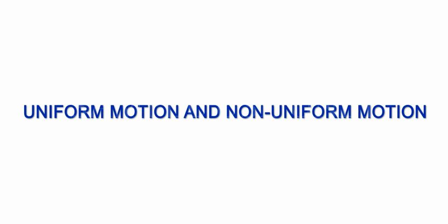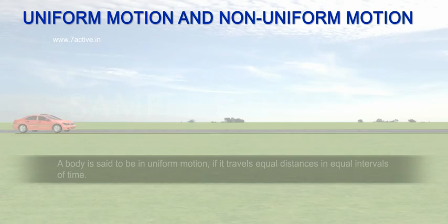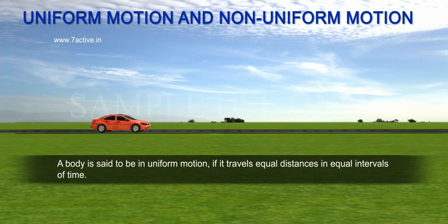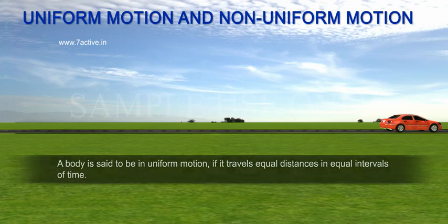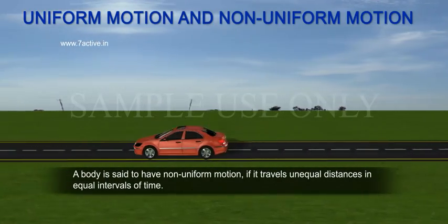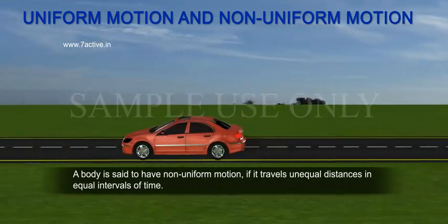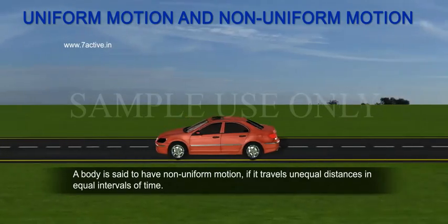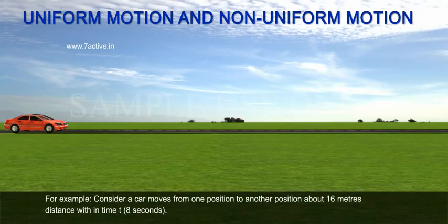Uniform motion and non-uniform motion. A body is said to be in uniform motion if it travels equal distances in equal intervals of time. A body is said to have non-uniform motion if it travels unequal distances in equal intervals of time.